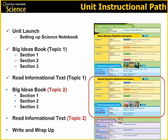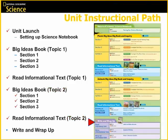Once you have completed the Read Informational Text section for Topic 1, it is time to repeat the Big Ideas instruction and Read Informational Text instruction for Topic 2. Remember, you will be using the same teacher's edition, but a new Big Ideas book. After completing the Big Ideas and Read Informational Text instruction for both topics, we are ready to look at the last part of the unit — the Write and Wrap Up instruction, located behind the purple tab.